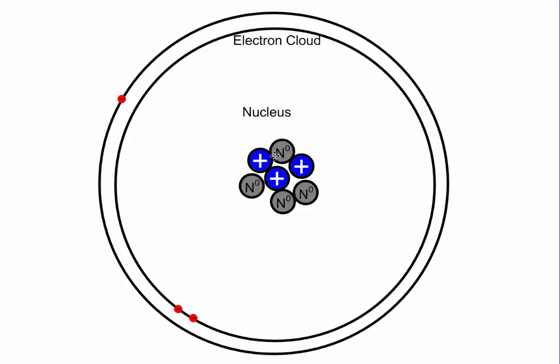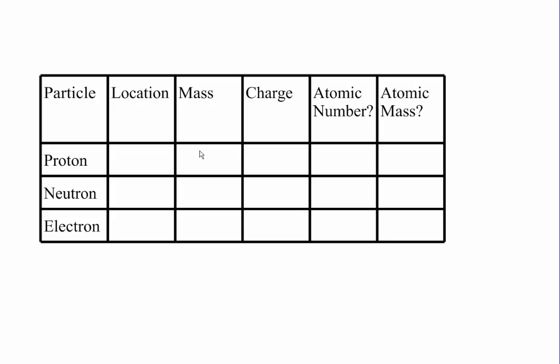Let's take a look at the three different types of particles that make up an atom, and we're going to fill in this table as we do. Now, not all the table is going to make sense to you at first, but we're going to fill it in, and then over time, over the next few videos, it will all be explained to you and make a little bit more sense.